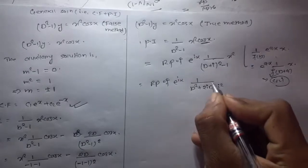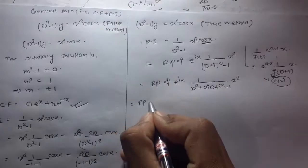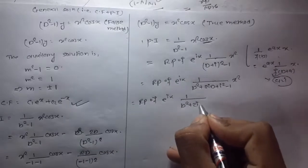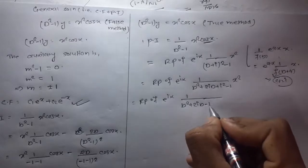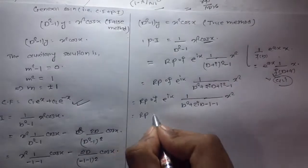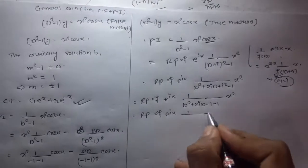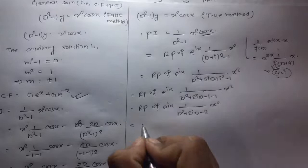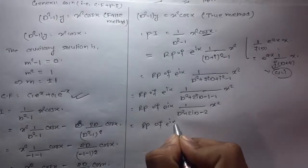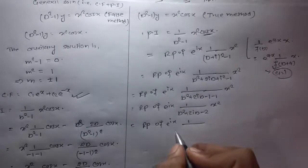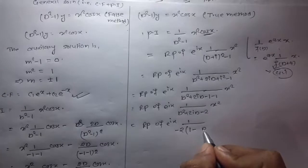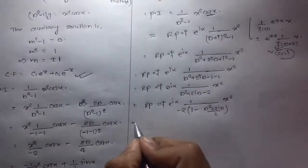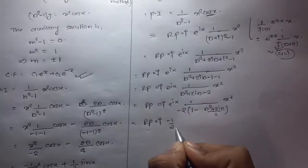This is the real part of e^(ix) · 1/(D² + 2iD + i² - 1) · x². Since i² = -1, this becomes the real part of e^(ix) · 1/(D² + 2iD - 1 - 1) · x², which is the real part of e^(ix) · 1/(D² + 2iD - 2) · x².